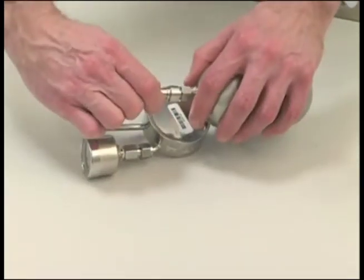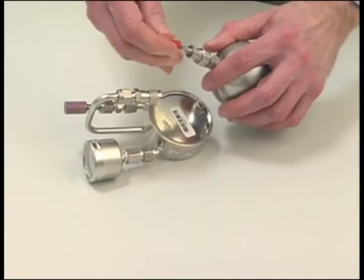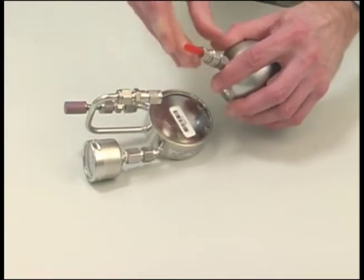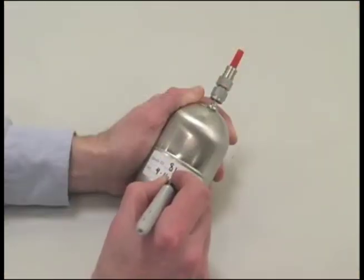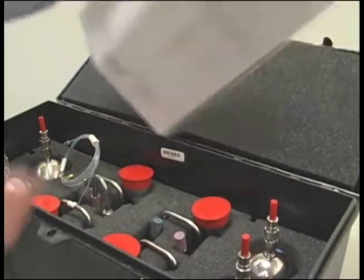When your sampling period is over, remove the regulator by pulling back the collar and slipping it off the can's inlet stem. Replace the protective cap, label the sample, and fill out the chain of custody. Repack and return everything to Galson Labs.